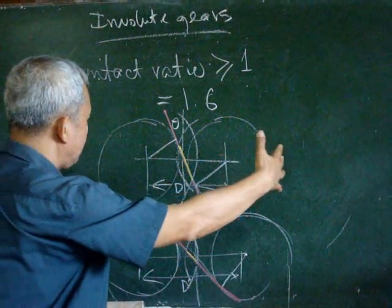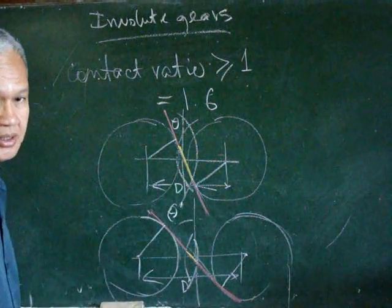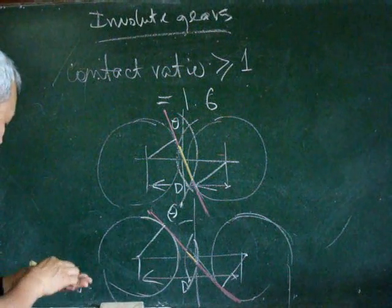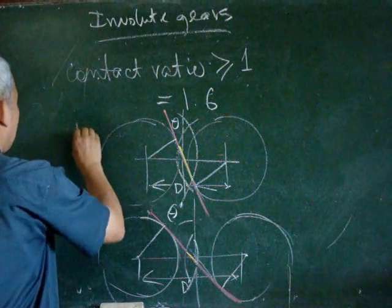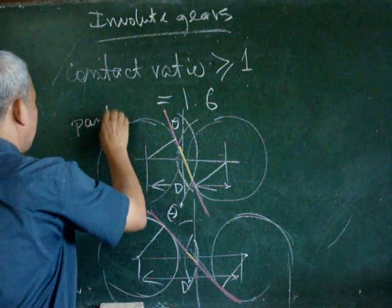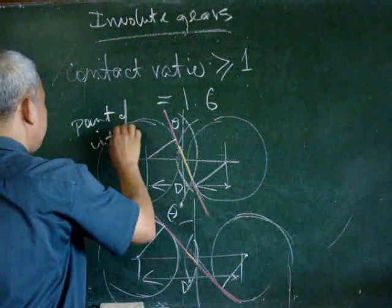Now if we have to move them closer, there is also a limit. And that limit is the point of interference.